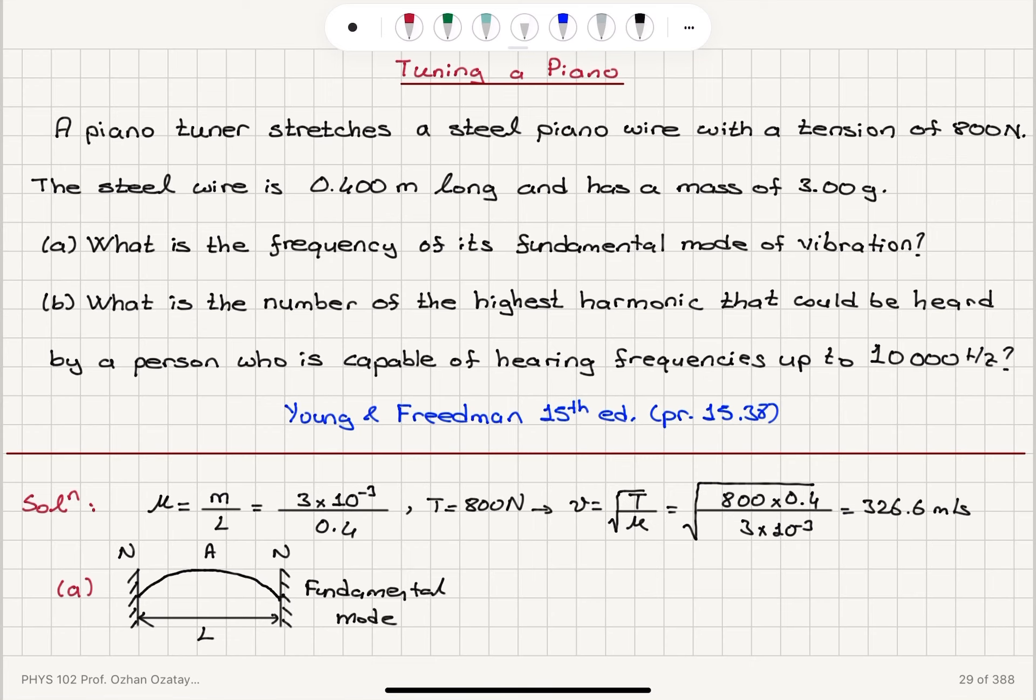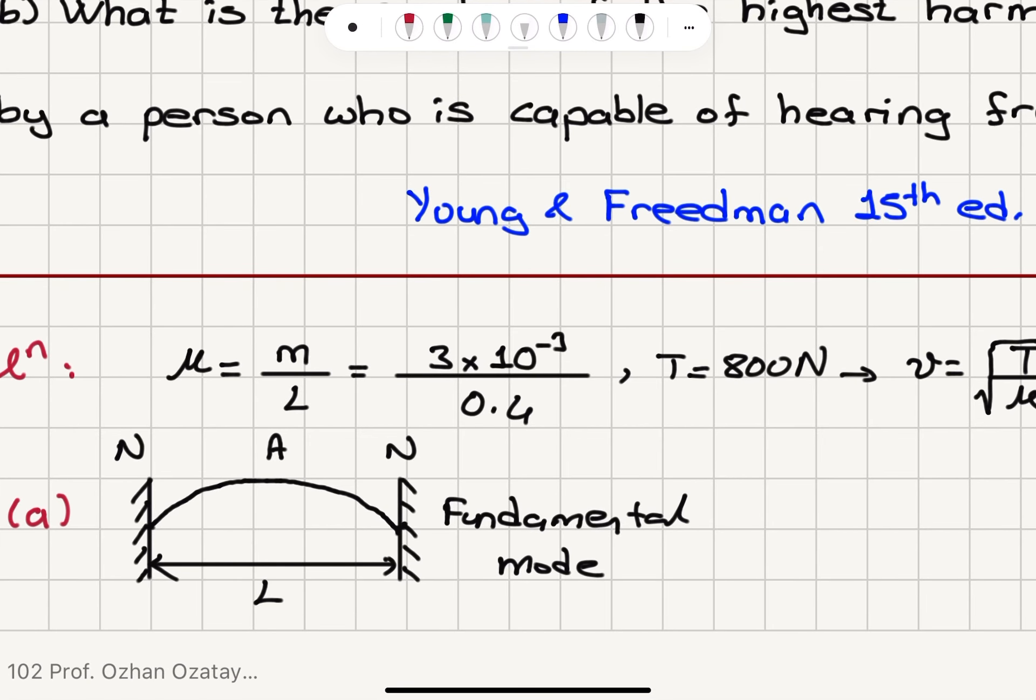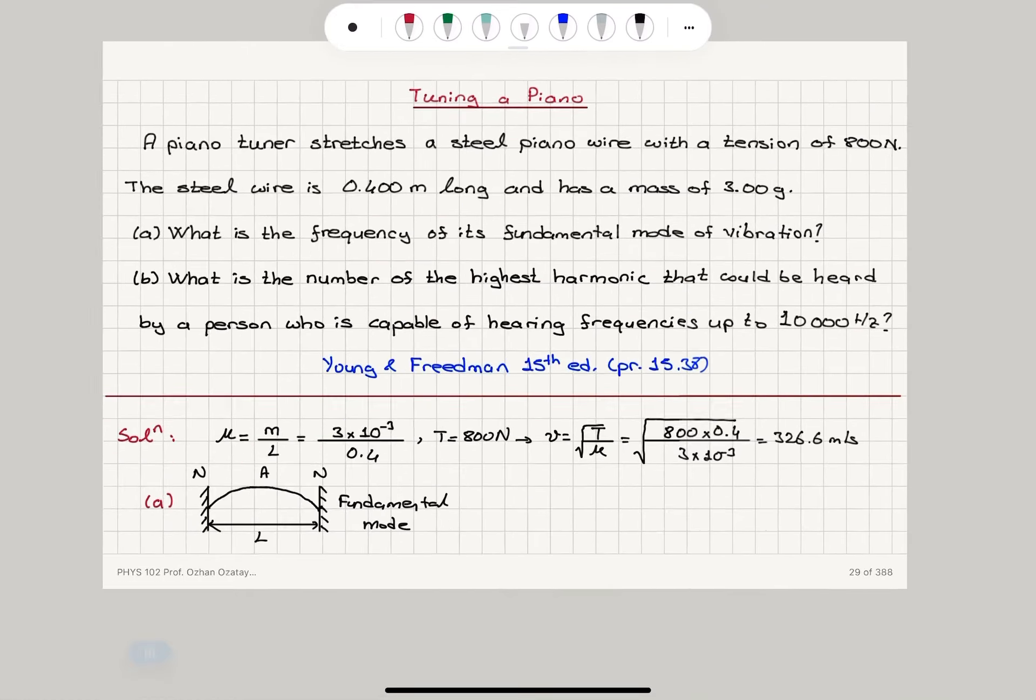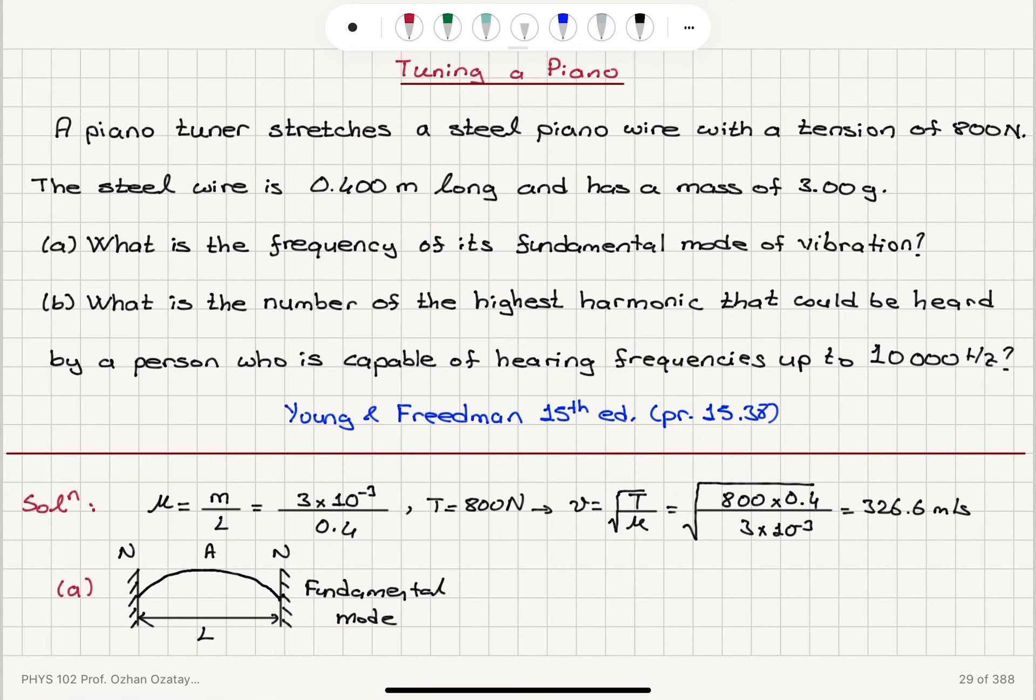Now, what is the fundamental mode? We have a boundary condition with two fixed ends. So we have node and node here. So we can have a node anti-node node. So that's going to be half a wavelength, that would be our fundamental mode.